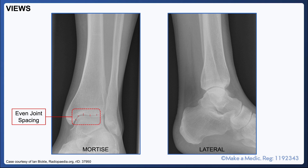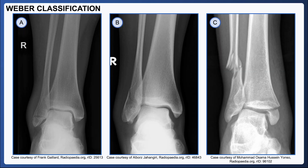The distal tibiofibular syndesmosis is a complex fibrous joint between the tibia and fibula, made up of several different ligaments. The level of involvement of the syndesmosis is used in the classification of ankle fractures, so it's not something that you can see on an X-ray, but it's important to be aware of where it's located.